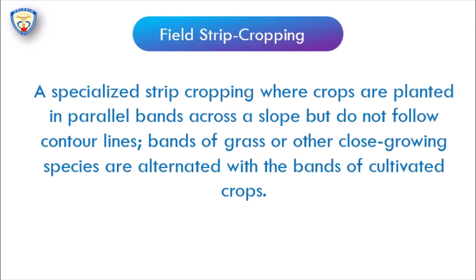Field strip cropping is a specialized strip cropping where crops are planted in parallel bands across a slope but do not follow the contour line. Bands of grass or other close-growing species are alternated with bands of cultivated crops — an alternative way of growing grasses and close-growing crops.